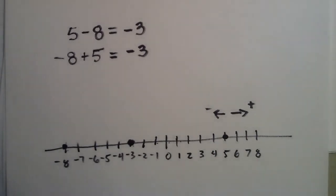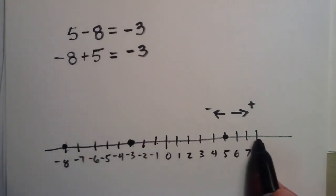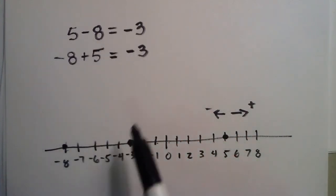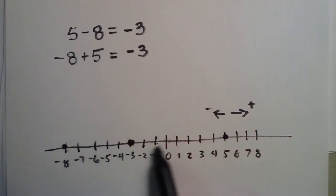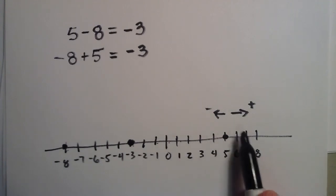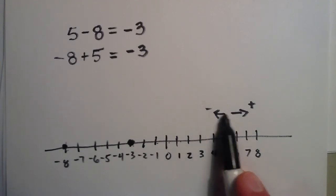So hopefully that gives you a little bit of an idea of how to visually understand negative numbers by plotting them on a number line. And if you're having a hard time figuring out how to do something like this, you can always go back to these number lines and start with your first number and move left or right, depending on whether you're doing subtraction or addition.